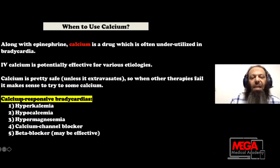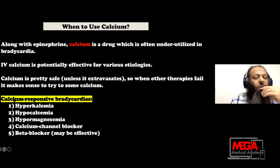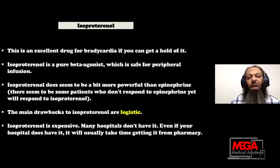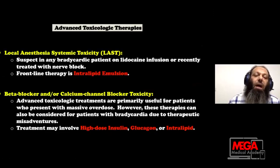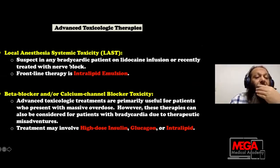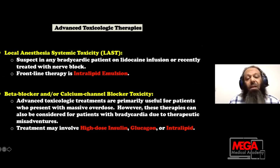Calcium gluconate is underestimated and underutilized in ICU patients for bradycardia. The indications — what we call calcium-responsive bradycardia — are: hyperkalemia, hypocalcemia, hypermagnesemia, calcium channel blocker toxicity, and occasionally beta-blocker toxicity. For local anesthetic systemic toxicity, one of the important antidotes is lipid emulsion — if a patient in ICU received local anesthetic and came to ICU bradycardic, think about lipid emulsion. For beta-blocker and calcium channel blocker toxicity, use high-dose insulin, glucagon, or lipid emulsion. The definitive electrical therapy is transvenous pacing, or TCP as a temporizing bridge.